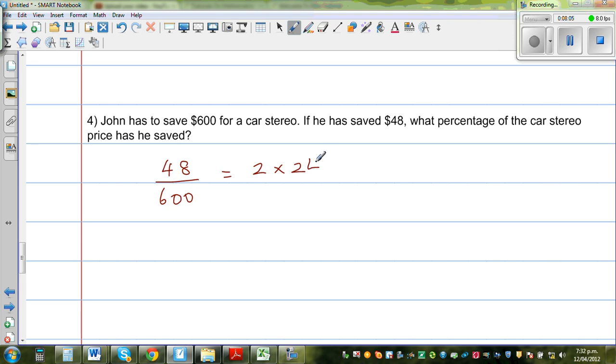2 times 300. So this is 24 out of 300. OK. So can I write this as 3? So well, 24 I can write as 3 times 8. And 300 I can write as 3 times 100. So 3 and 3 gets cancelled. This is 8 out of 100. So that is nothing but 8%.